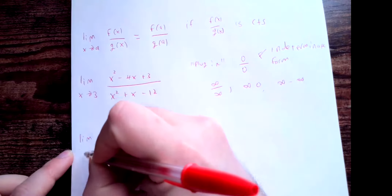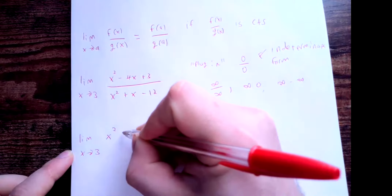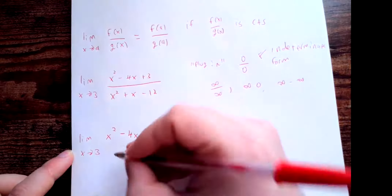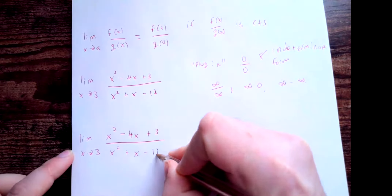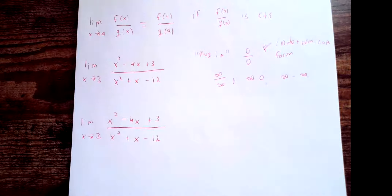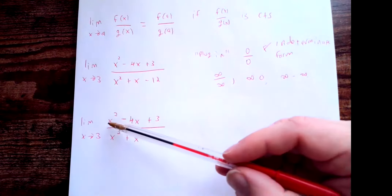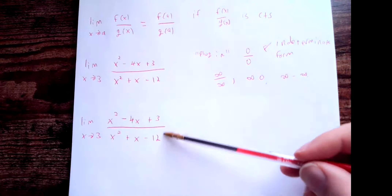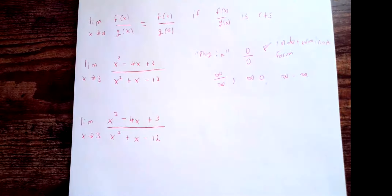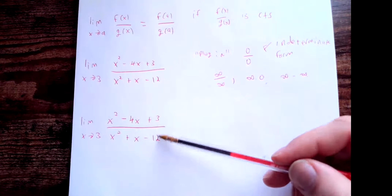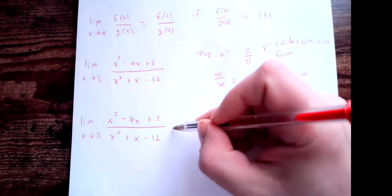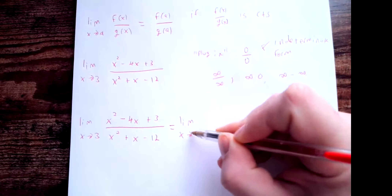Let's return to our original question: the limit as x goes to 3 of (x² − 4x + 3) divided by (x² + x − 12). We know this gives an indeterminate form — we can't simply plug in 3. Remember that a limit asks what this ratio approaches as x approaches 3. To find that, we need to re-express this ratio more clearly, and to do that you'll need to remember how to factor.